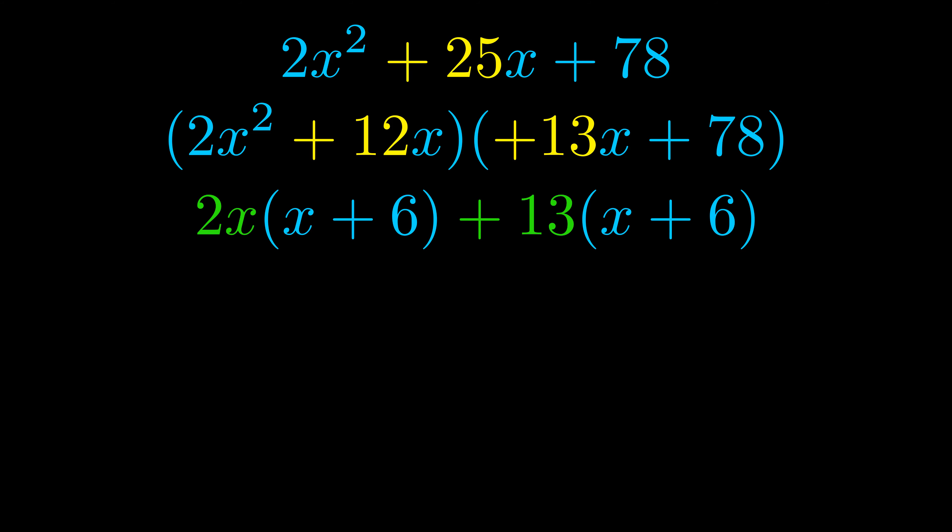Notice how what remains inside the parentheses is the same in both cases. The blue values are the same. Those blue values will become one of our factors, and we will combine the two green values, the GCFs that we pulled out, to get the other one.